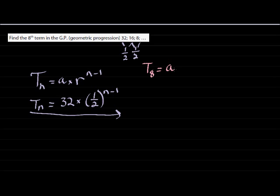We'll put in the 8 into the position of n, because the eighth term means the term in the eighth position. N is therefore 8. And then now I can replace with 8, and therefore 32 times a half to the power of seven. 8 minus 1 is 7.